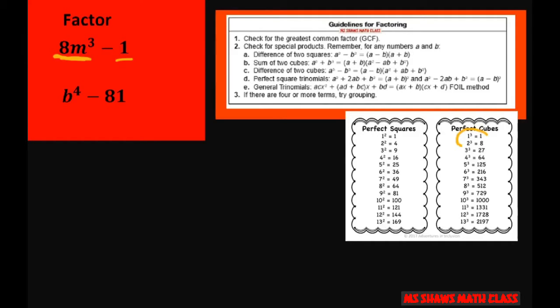And also I can take the cube root of m cubed and get m. So I'm going to let my a equal whatever the cube root of this is, which is going to be 2m, and my b equal the cube root of 1, which is just 1, and fill out my difference of two cubes formula right there.